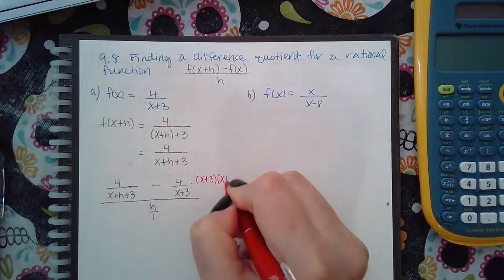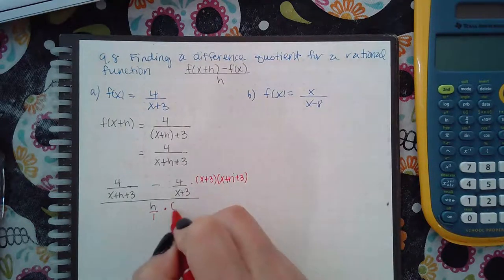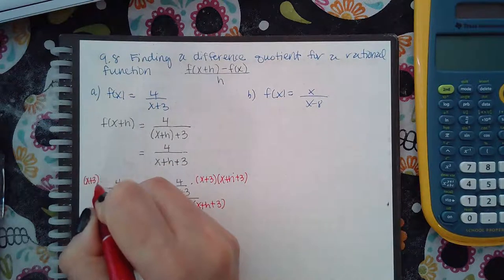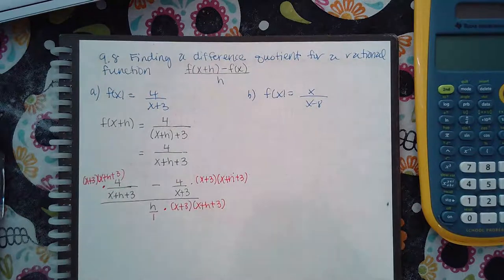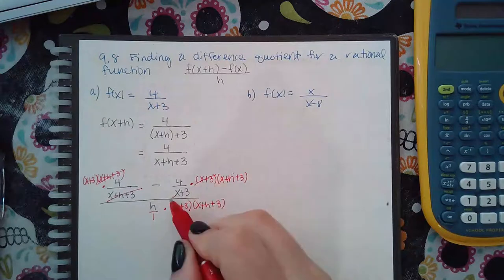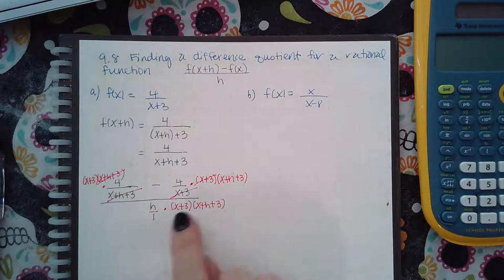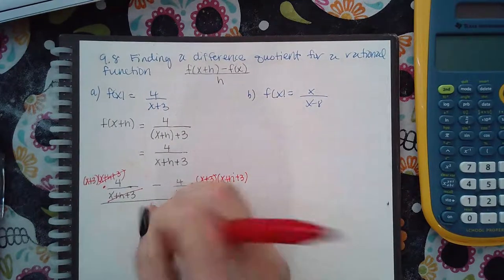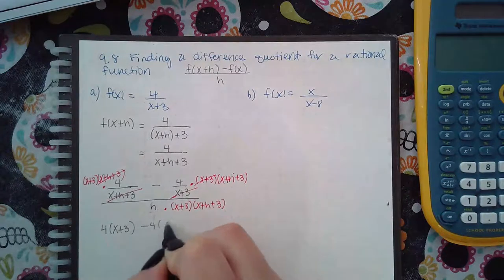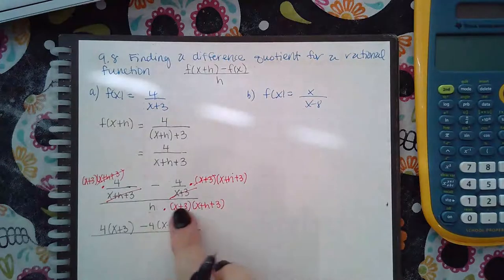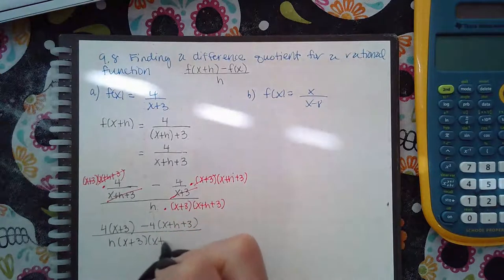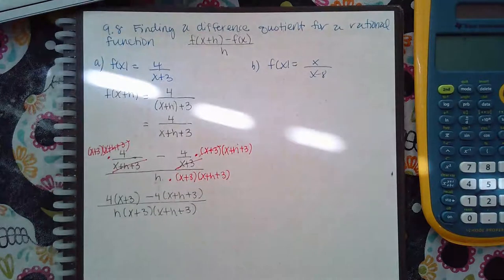When you multiply by one, it's not going to change the expression, so I don't really need to multiply by the one. We're going to multiply every fraction by the common denominator. This will cancel this denominator, this will cancel this denominator, and the denominator of the third is just one so it won't cancel anything. You don't have to write it as a fraction when it's over one. The goal is to cancel that h, so you don't want to multiply things out.